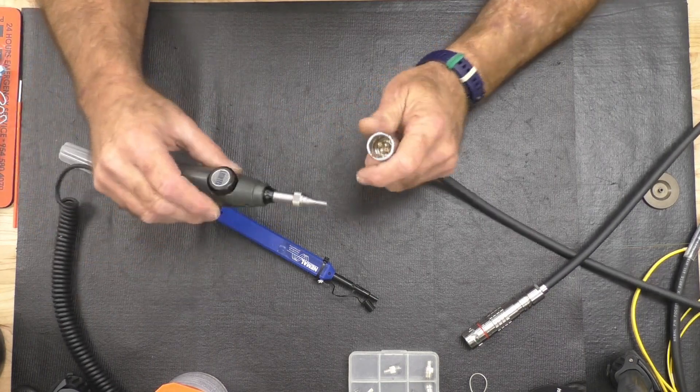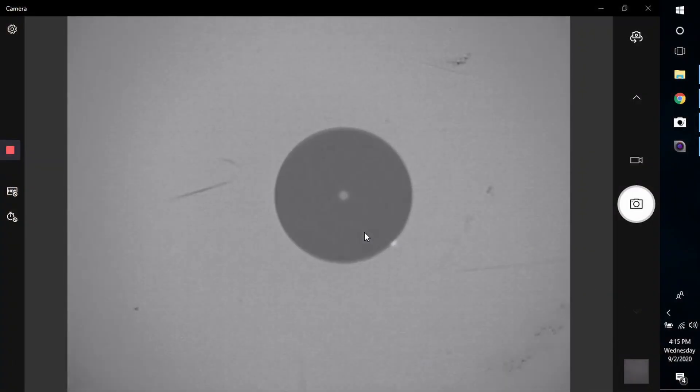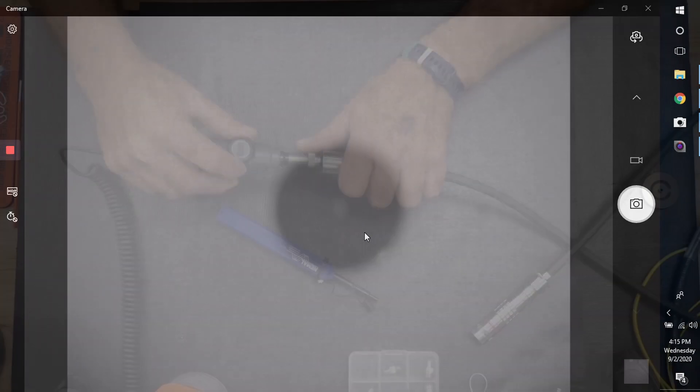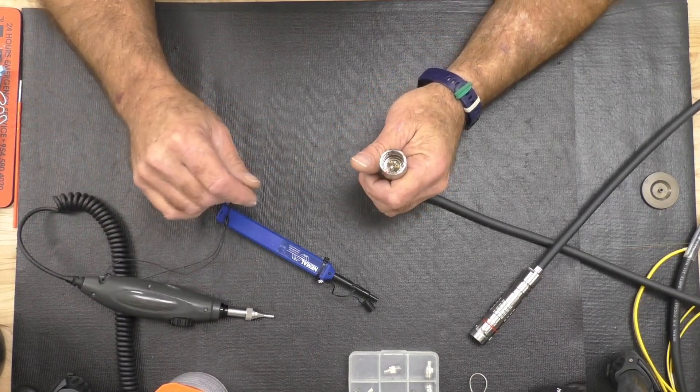It's important to own something like a video scope with the proper two-millimeter tip, which gives you the ability to reach down inside and visually inspect each of those contacts to know whether or not you need more cleaning.